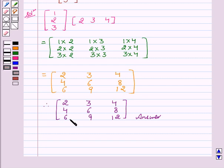Therefore, the product of two given matrices is 2, 3, 4, 4, 6, 8, 6, 9, 12.